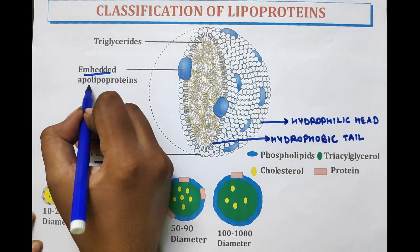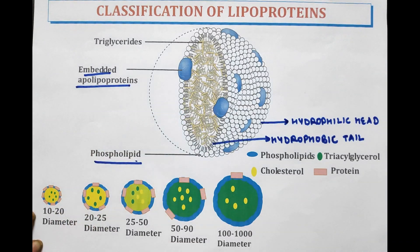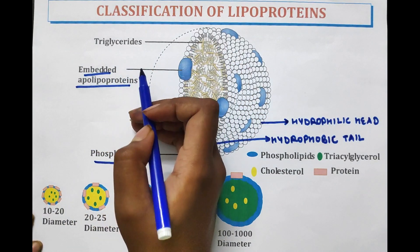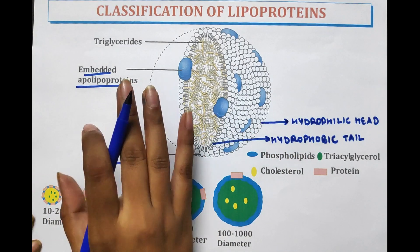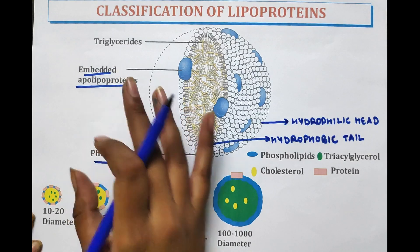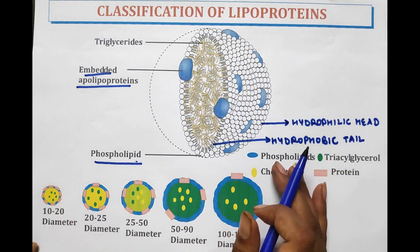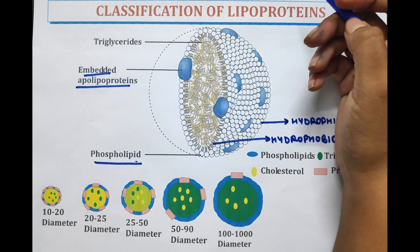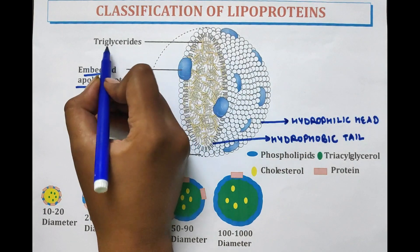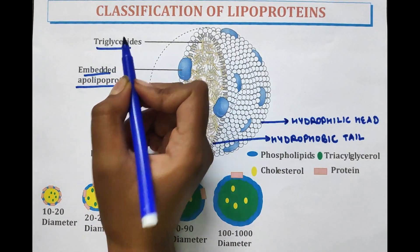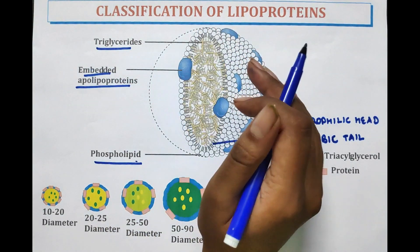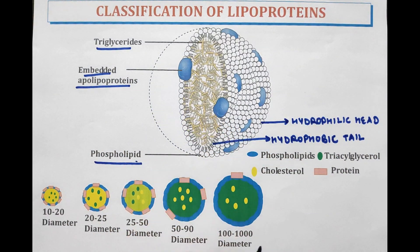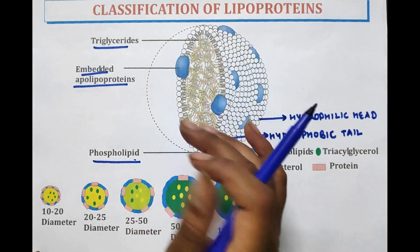Now the embedded apolipoproteins. Apolipoproteins are the proteins that bind lipids to lipoprotein — it helps in the binding of lipids to form lipoproteins. Triglycerides are an ester derived from glycerol and three fatty acids. Triglycerides are the main constituent of fat. These were the structural components of lipoproteins.